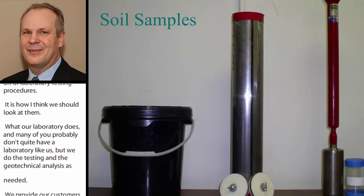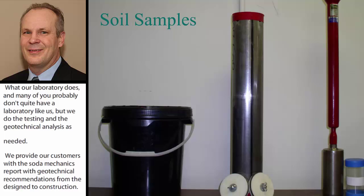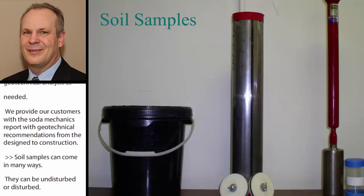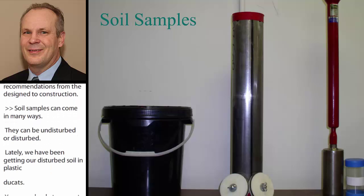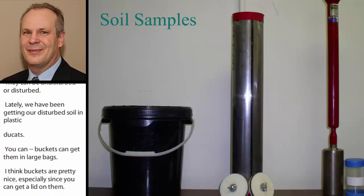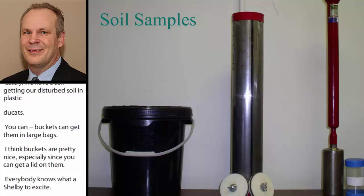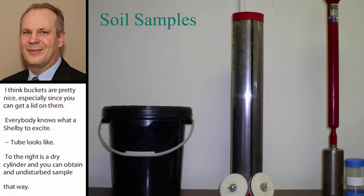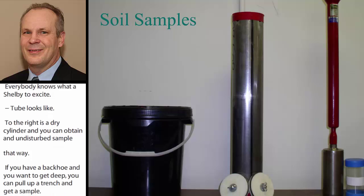Soil samples can come in many ways: undisturbed and disturbed. Normally, lately we've been getting our disturbed soils in plastic buckets — you can also get them in large bags. Plastic buckets are pretty nice, especially if you can get a suitable lid on them. Everybody knows what a Shelby tube might look like. On the right side here is a drive cylinder, and you can obtain an undisturbed sample in the field that way. If you have a backhoe and want to get deep, you can trench up and get a sample, or use this apparatus on your liner to get a post-sample of a constructed liner and send it in for testing.